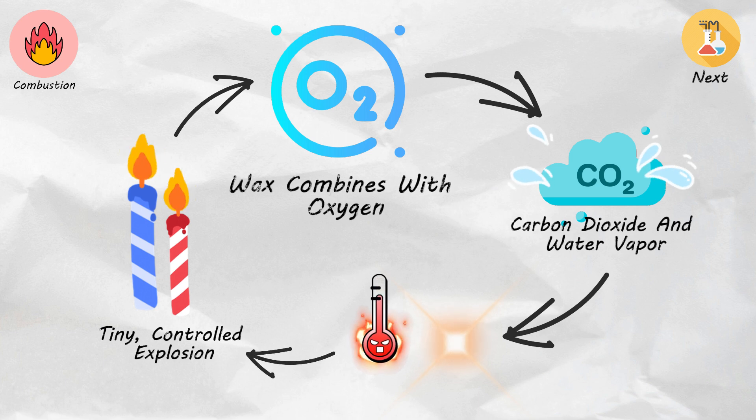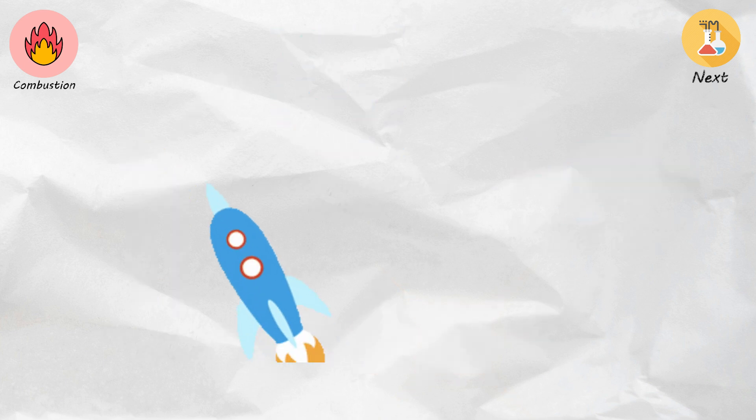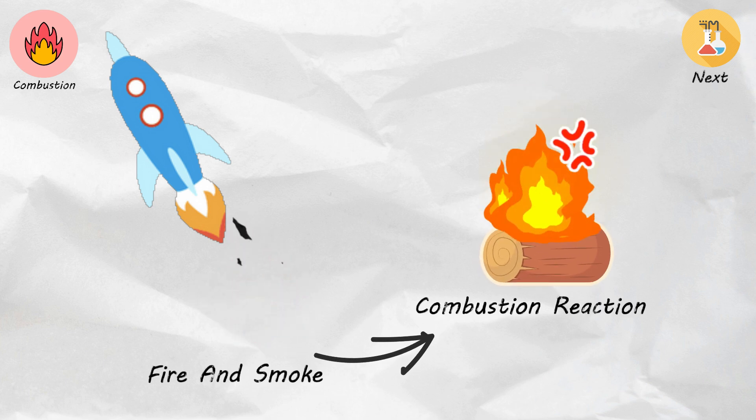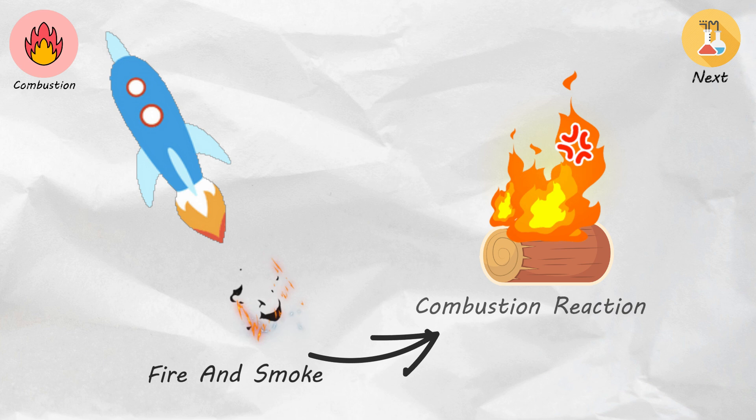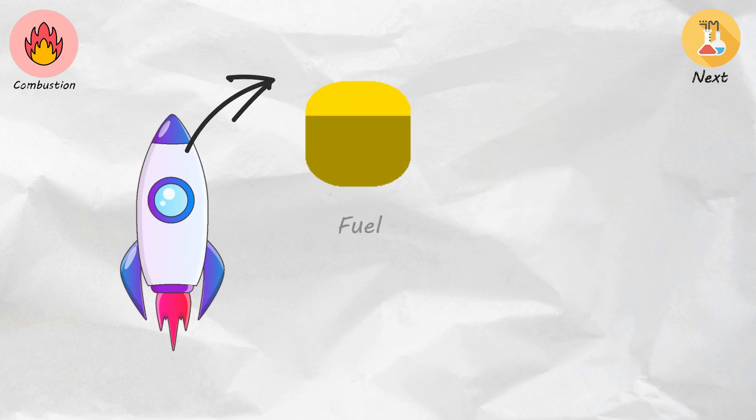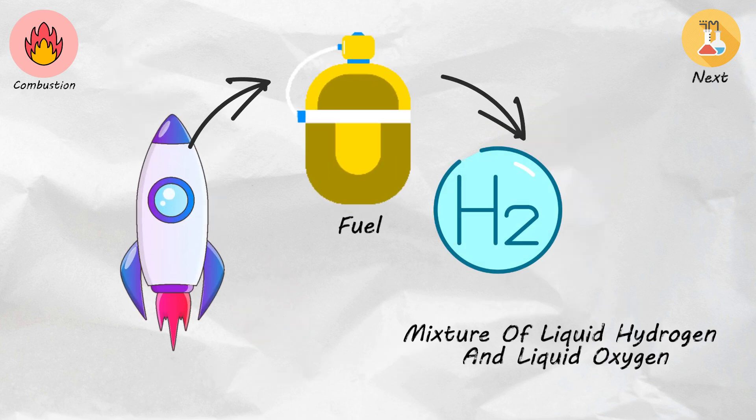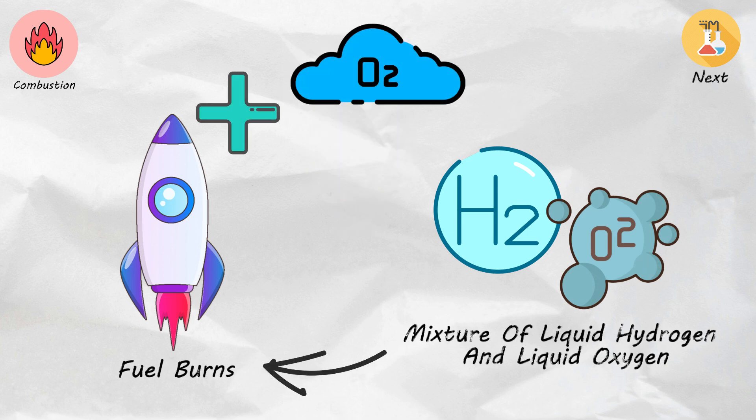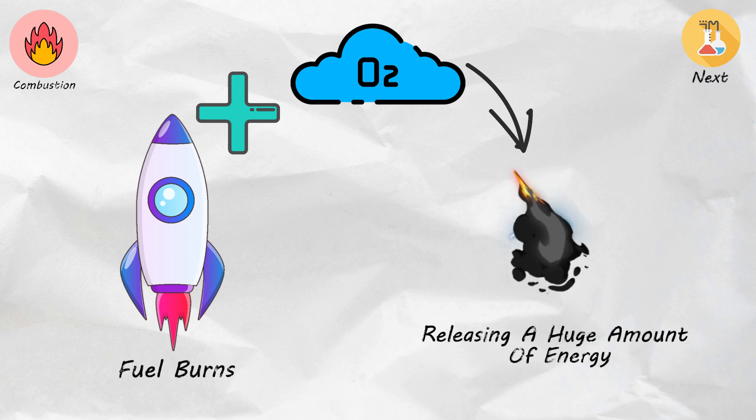It's like a tiny controlled explosion. Picture a rocket blasting off into space, leaving a trail of fire and smoke behind. That spectacular display is a combustion reaction in action. Inside the rocket engines, a fuel, often a mixture of liquid hydrogen and liquid oxygen, ignites. As the fuel burns, it combines rapidly with the oxygen from the air, releasing a huge amount of energy.